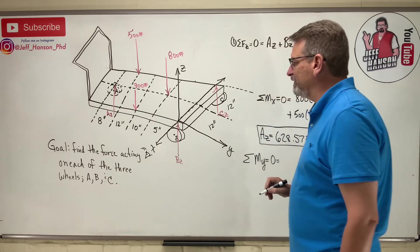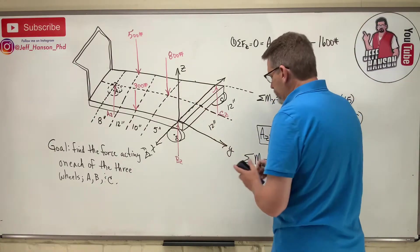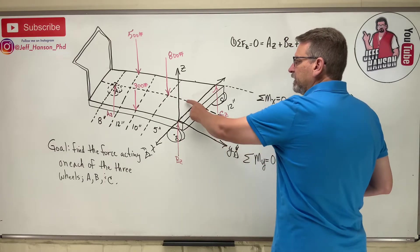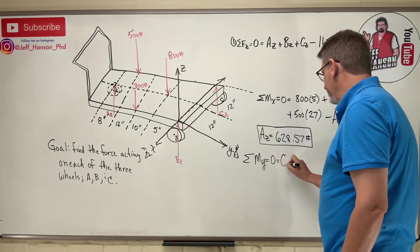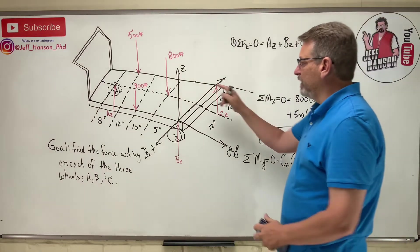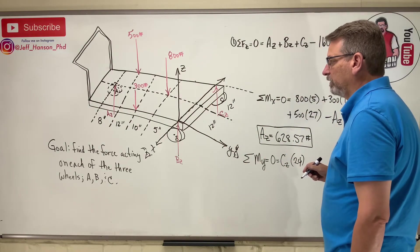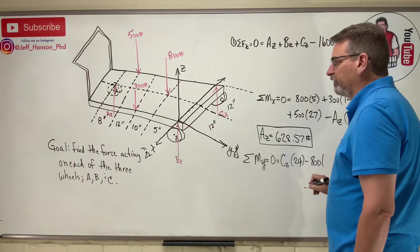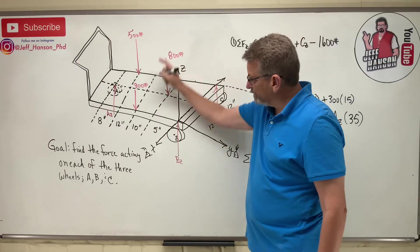So the moment about the y - now you got to be clever, right, and you can move it around, that's okay. All right, now we're talking about things that make me spin around the y. So Bz gone, the 300 gone. So how about the... here's our eyeball looking towards the origin. Let's see, what do we got here? The 800, let's do this guy. Cz is going to rotate me positive, so Cz times how far away? 24.